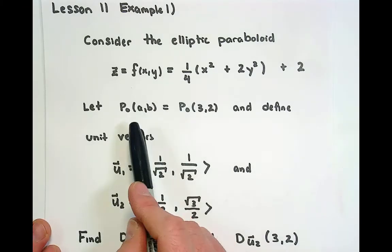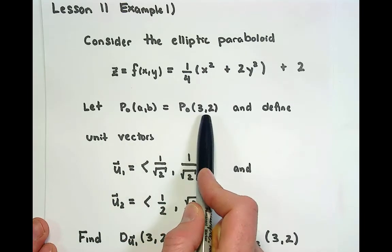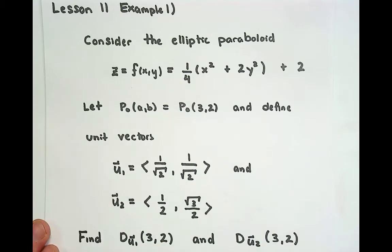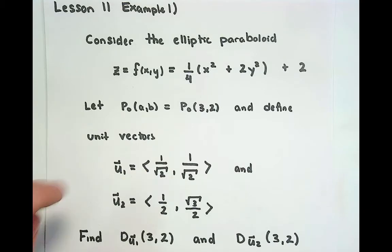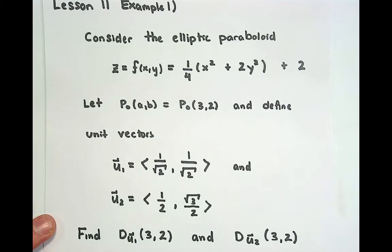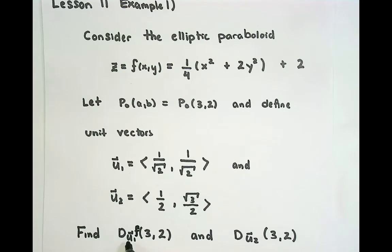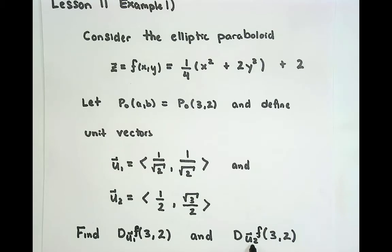When we look at this elliptical paraboloid, we're going to find the directional derivative at the point (3, 2). We want to do it in two different directions. One direction is defined by the unit vector u1, which is given by (1/√2, 1/√2). The second direction is given by the unit vector (1/2, √3/2). We're asked to find the directional derivative of f in the direction of u1 at (3, 2), and also in the direction of u2 at (3, 2).